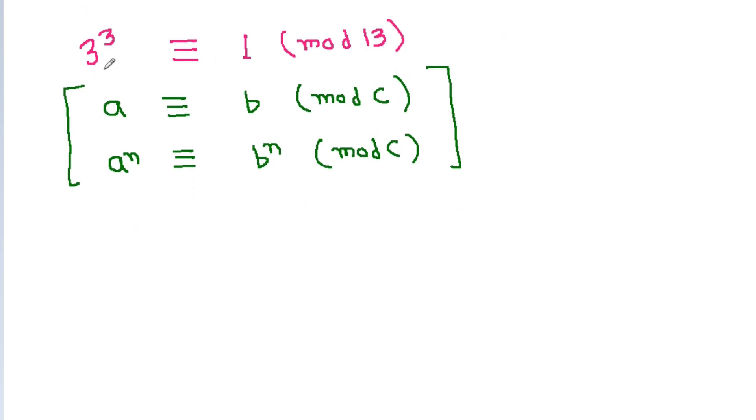So here if we raise both sides to the power 666, then 3 power 3 power 666 will be equivalent to 1 power 666 mod 13, and it is equivalent to 1 mod 13.